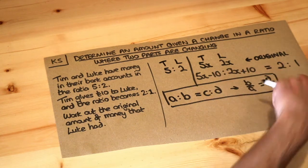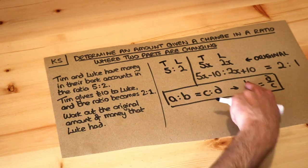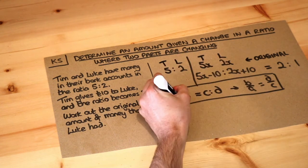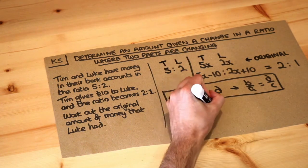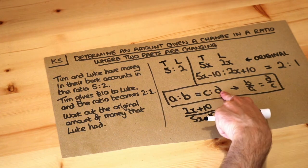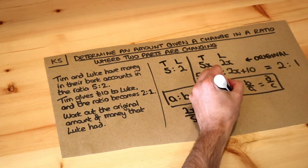So these two ratios that we've equated. So we're doing B over A. This divided by this which is 2x plus 10 over 5x minus 10. And that's equal to D over C. D over C that's 1 over 2.